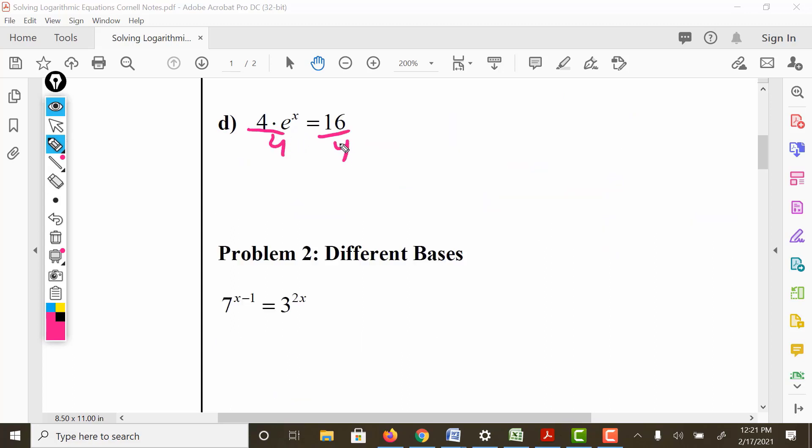We'll divide both sides by 4. In the previous problem, we subtracted because it was positive. In this case, it's being multiplied, so the opposite of that would be division. 16 divided by 4 is 4. And we do ELB. The exponent is the logarithm of the base.